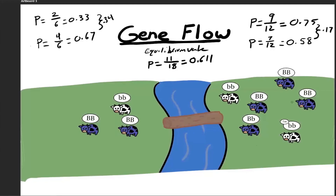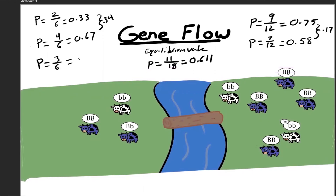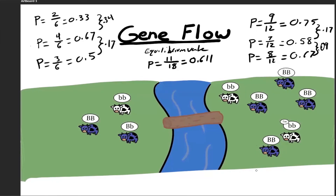Let's say another migration event occurs. The allele frequency for the left population is now 0.5, and for the right population it's 0.67. Looking at the difference again, we see a change of 0.17 in the left population and a difference of 0.09 in the right population. What you'll notice is that the bigger population has a greater influence on the smaller population than the smaller population has on the larger population.